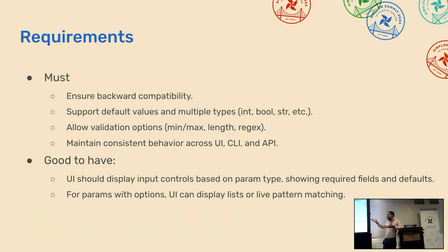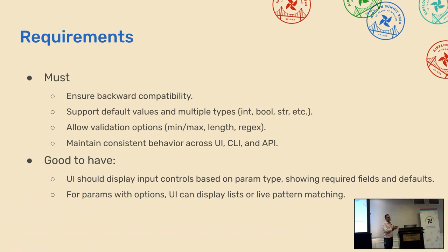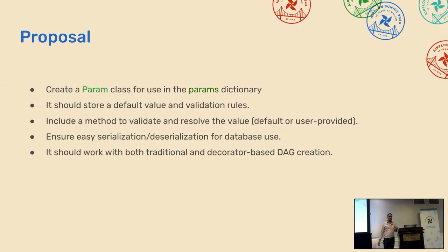The good-to-have requirements were: the UI should hint at what values are expected, provide validations like regex matching, length, and range. And at minimum, it must clearly show which parameters are required and which are optional — and prevent triggering the DAG without providing required values.